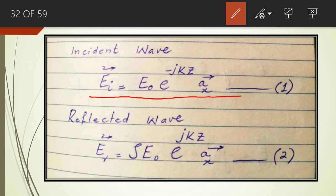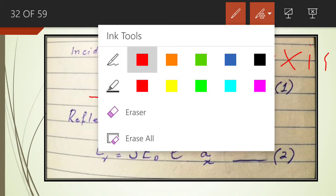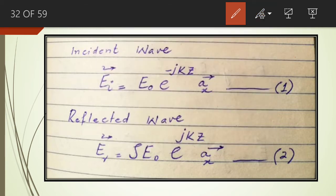The electric field intensity of the incident wave will be equal to E₀ times e raised to the power minus jKZ, multiplied by the unit vector Aₓ. The minus sign indicates that the incident wave is moving along the positive Z-axis inside this resonant cavity. The electric field intensity of the reflected wave will be equal to ρE₀ times e raised to the power jKZ multiplied by the unit vector Aₓ.